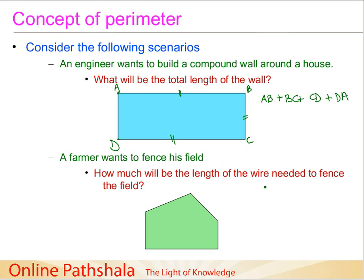He needs to find out the length of the wire needed to fence his field. He can follow the same approach as the engineer. The cost will be decided by the length of the wire. So let's say he marks a point A — in reality we don't mark points, but this is for our understanding. He goes from this corner to the other corner, A to B, measures it, and writes it in his notebook.